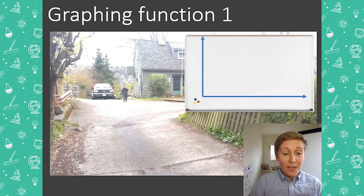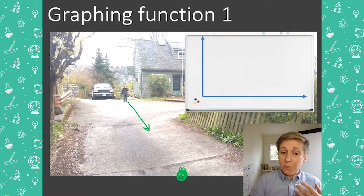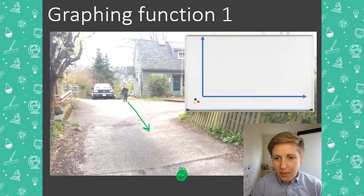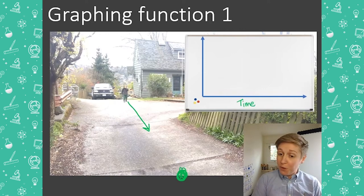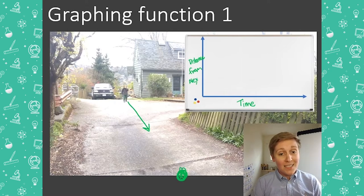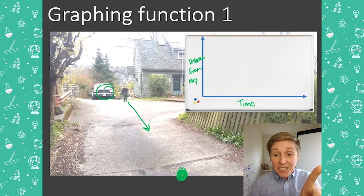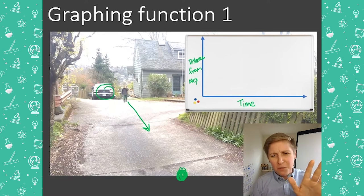Next, here is my son Liam. He's going to be running toward me — I'm standing somewhere behind the camera, and Liam is going to be running in this direction. I want you to watch what Liam does in this video and think about the relationship between his distance from me and time. I'm going to graph as the video plays. Notice I'm very specific about what my y-axis represents: distance from Alexander, not from anything else.